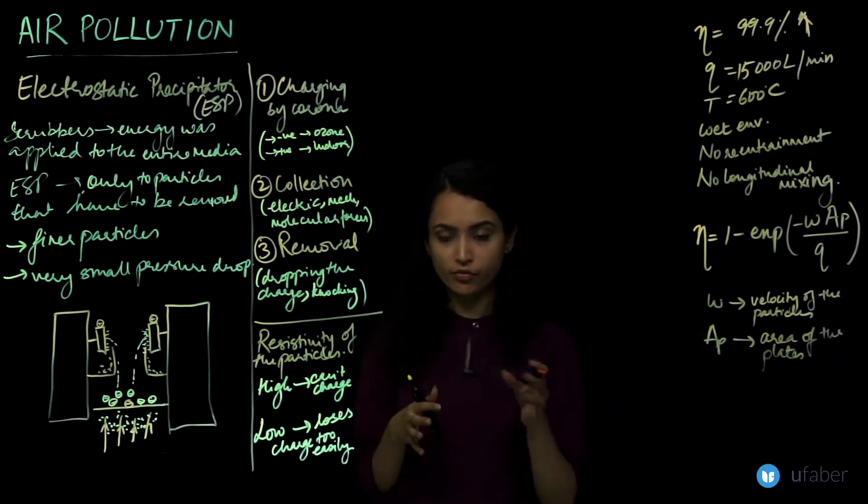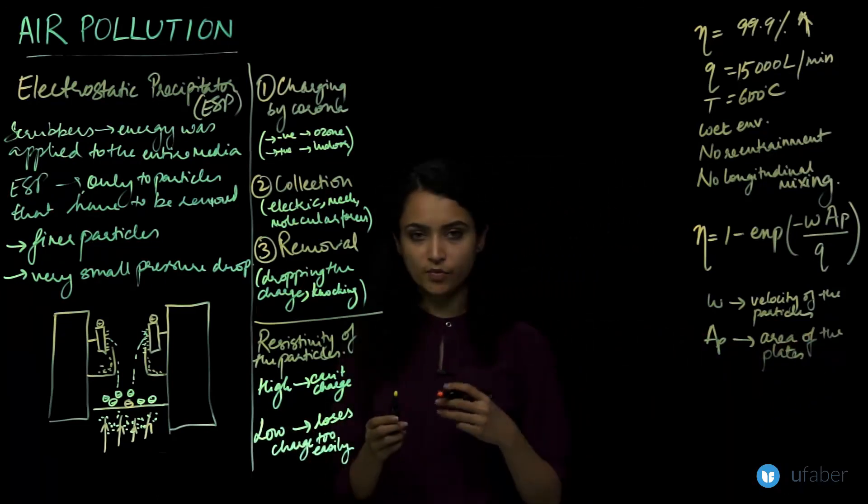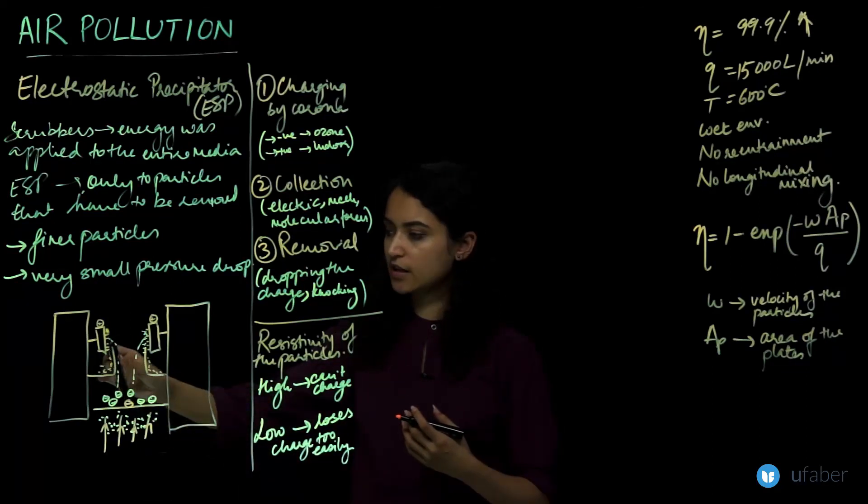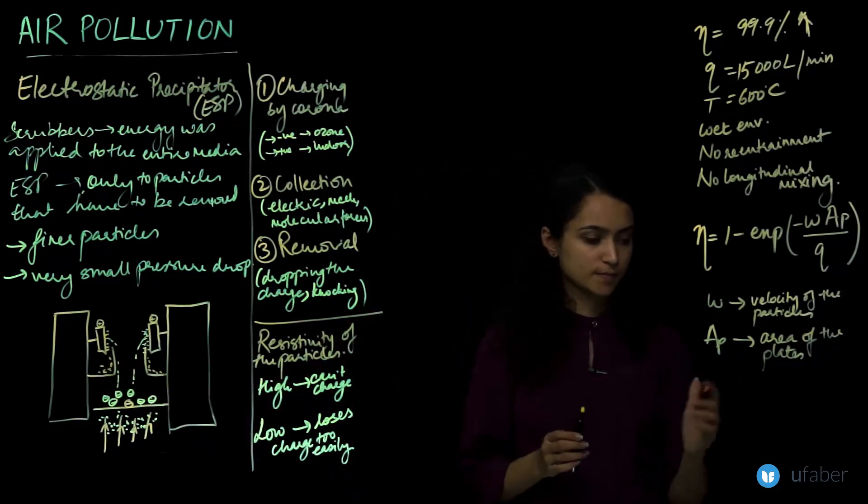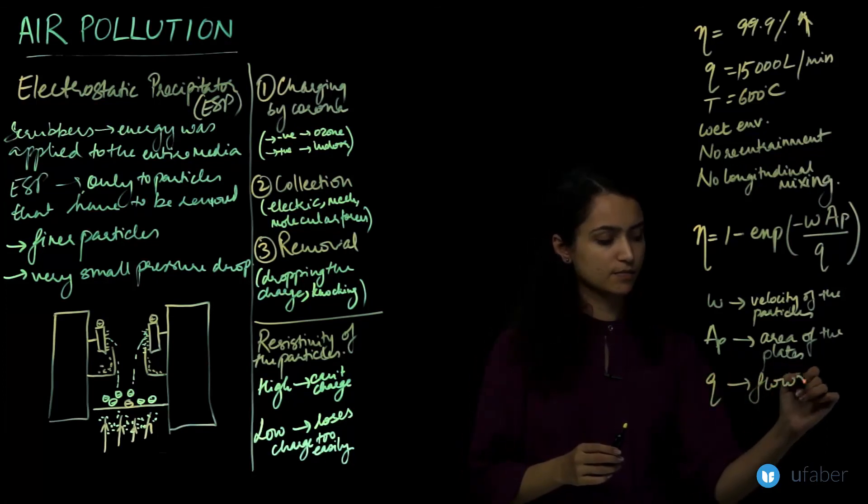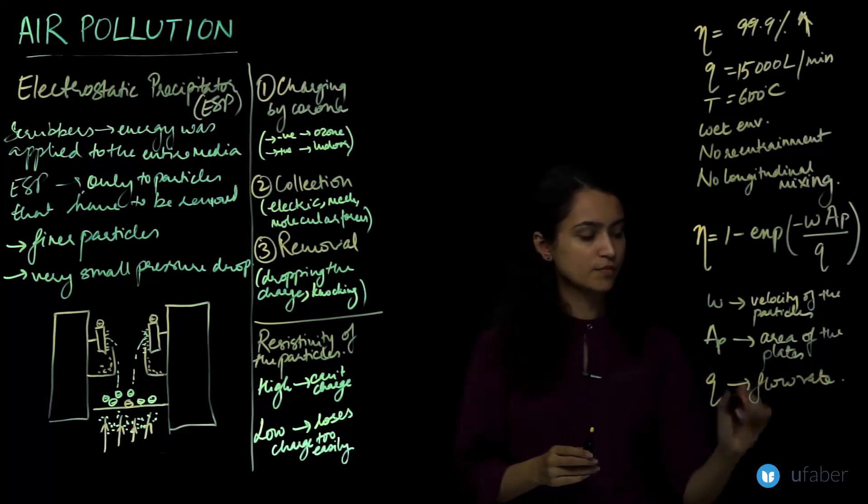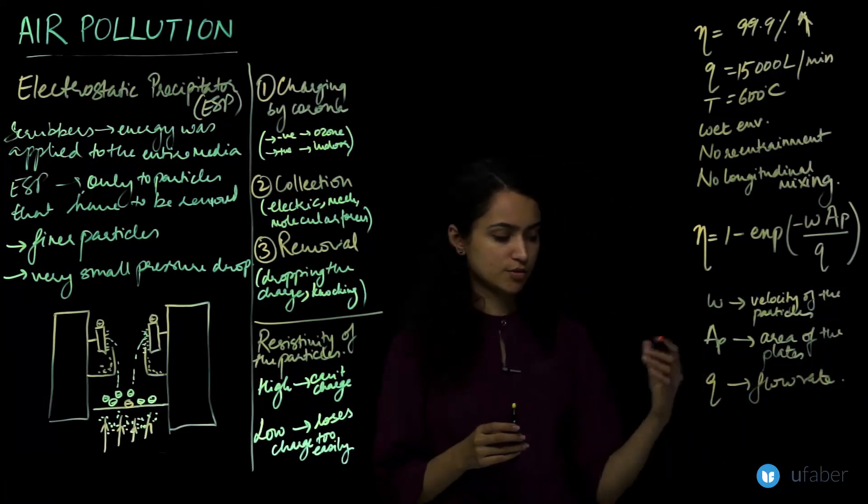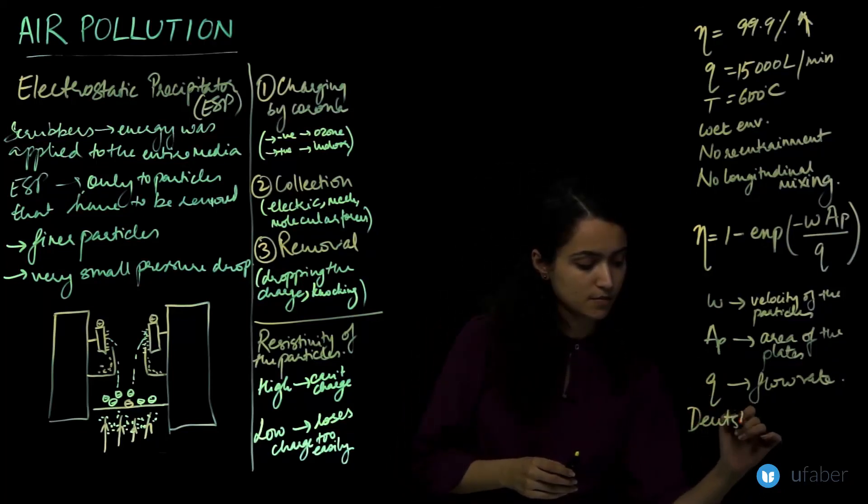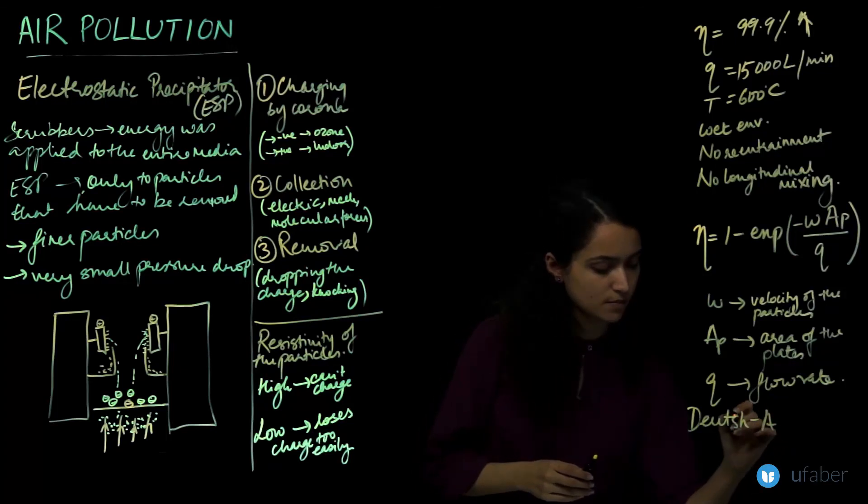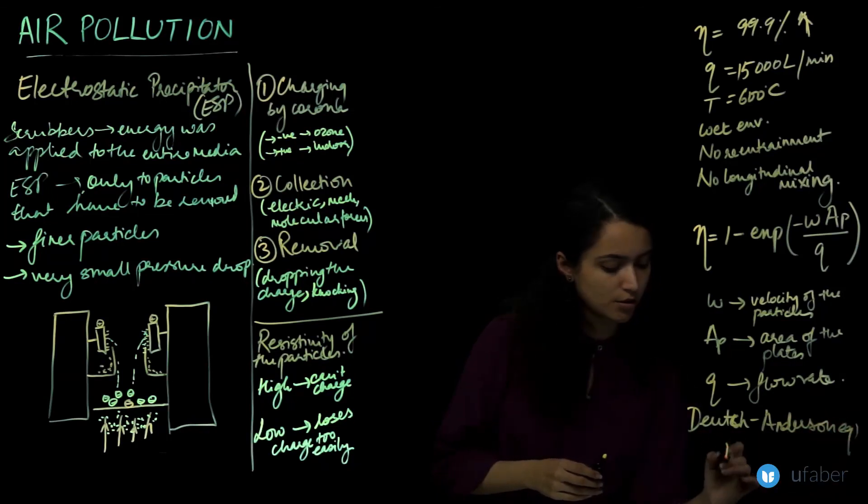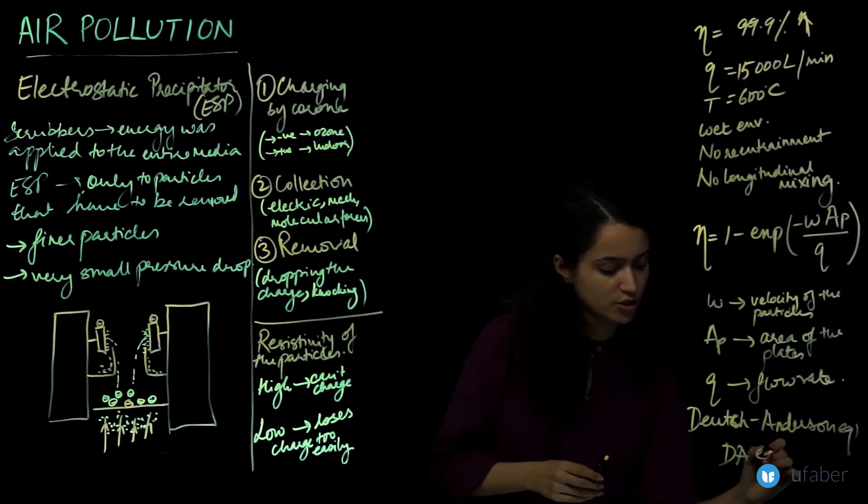When I am given the dimensions of one plate, I have to keep in mind that there will be two plates always in an electrostatic precipitator and each plate will have just one surface. And Q is the flow rate of the gas. This is called the Tosh-Anderson equation or just the D-I equation for short.